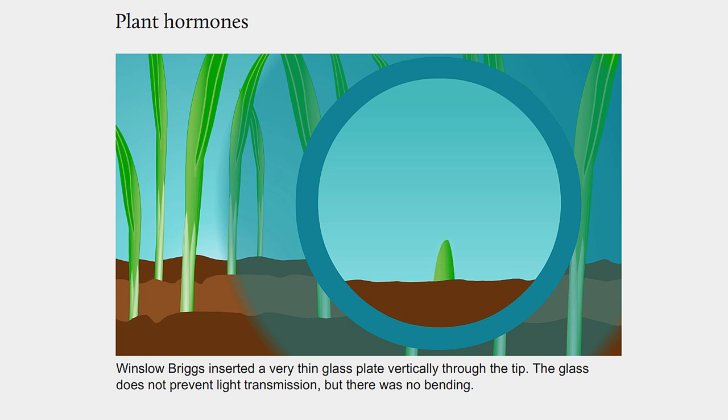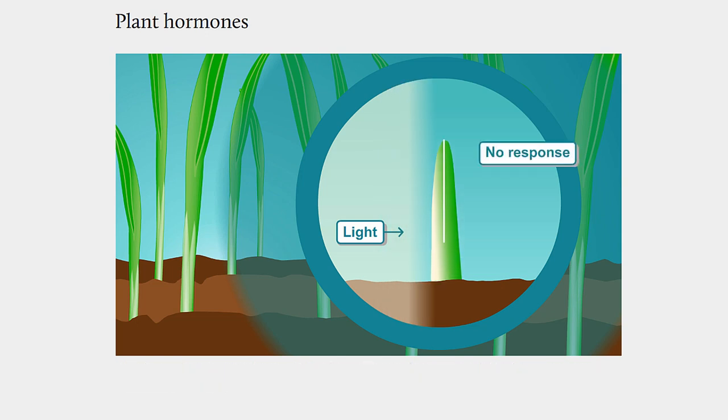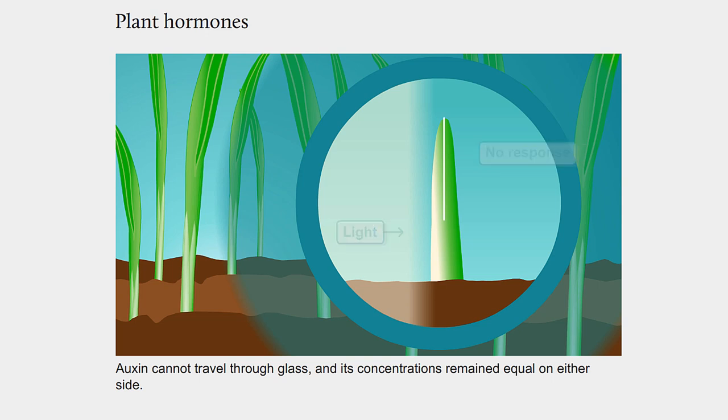Winslow Briggs inserted a very thin glass plate vertically through the tip. The glass does not prevent light transmission, but there was no bending. Auxin cannot travel through glass, and its concentrations remained equal on either side.